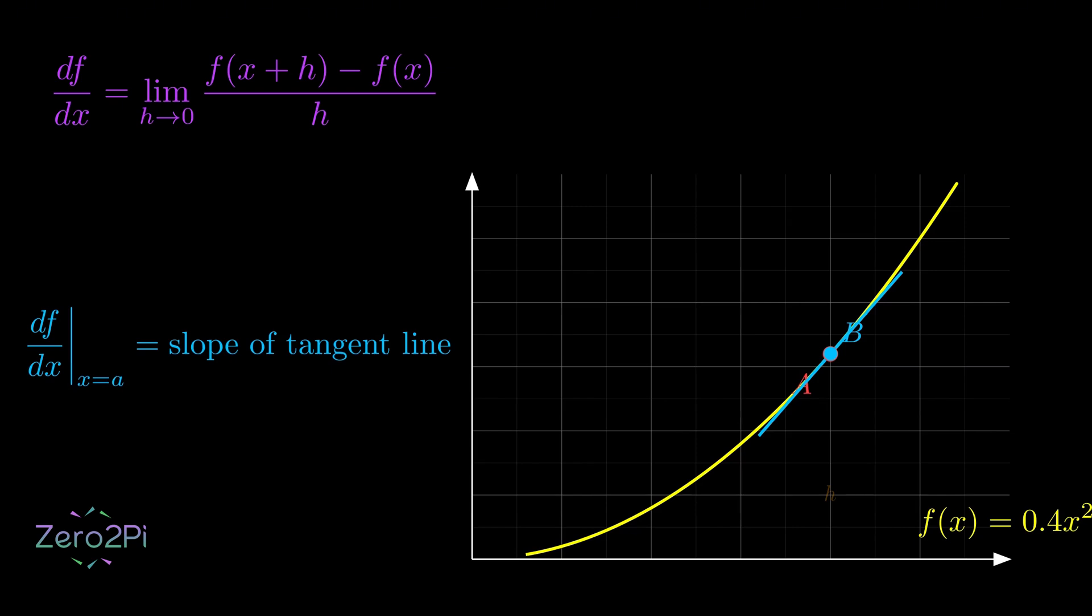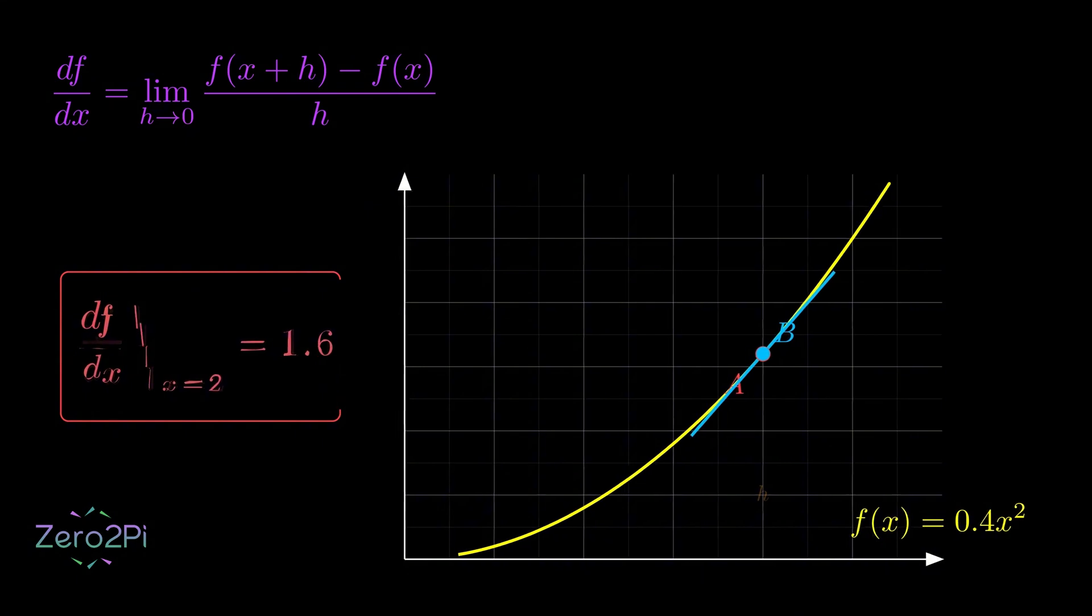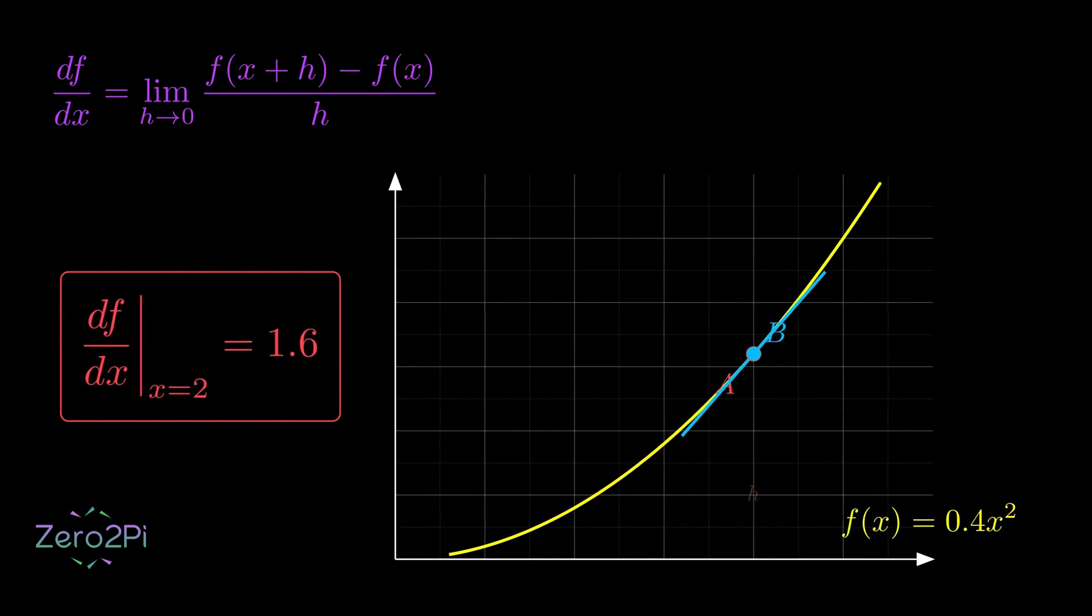For this particular curve, at x equals 2, that slope is exactly 1.6.